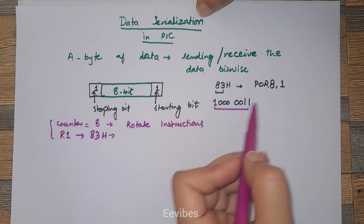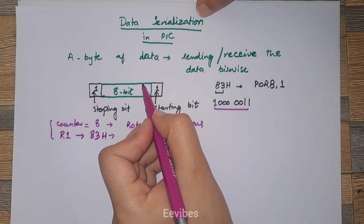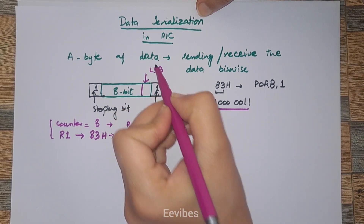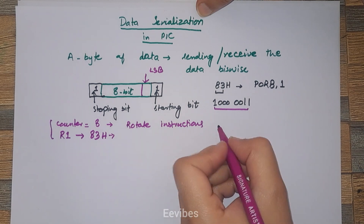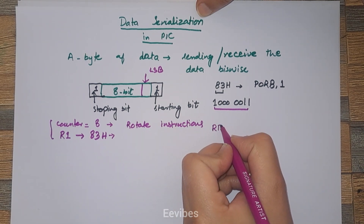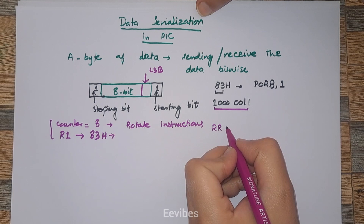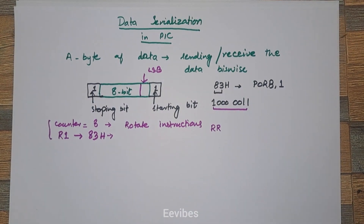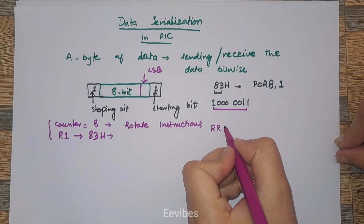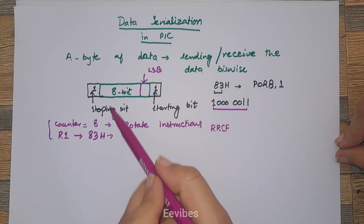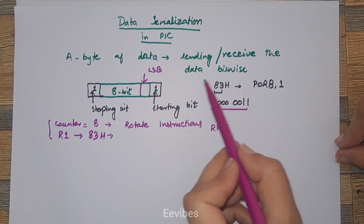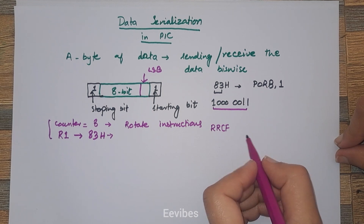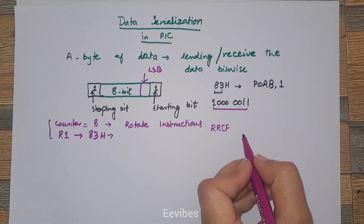Rotate instructions will be used for transmitting the data bitwise. We start transmission from the starting bit, then the LSB should be transferred first. We will use the Rotate Right through File Register (RRF) instruction — which rotates the contents of the file register via the carry bit — to implement serialization.